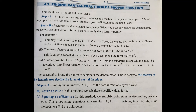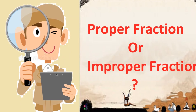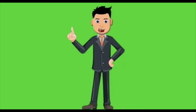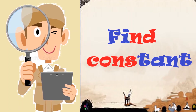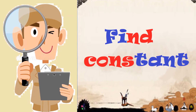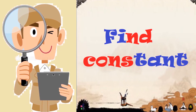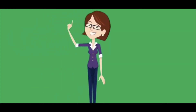Ab hum dekhenge finding partial fraction of proper fraction. Sabse pehle examine karo ki given example proper fraction hai ya improper fraction. Uske baad denominator mein maujood polynomial ko factorize karo. Step 3 mein constants A, B, C find karne hain — woh hum aage dekhenge. Ab hum dekhenge rules of partial fraction — mainly three rules hain.